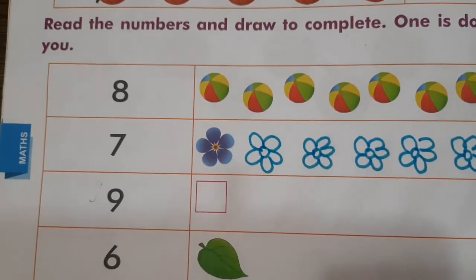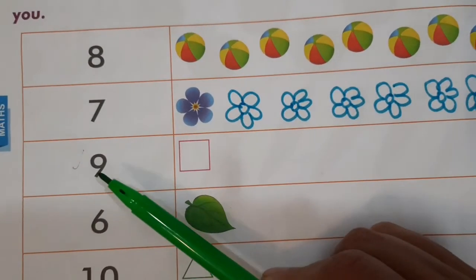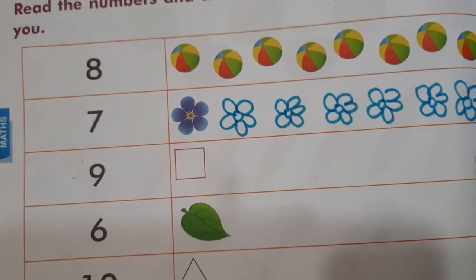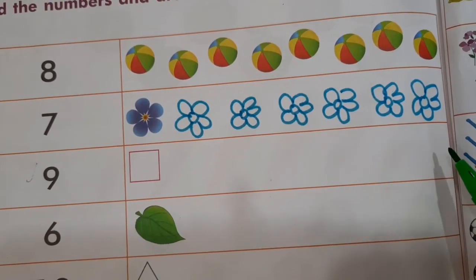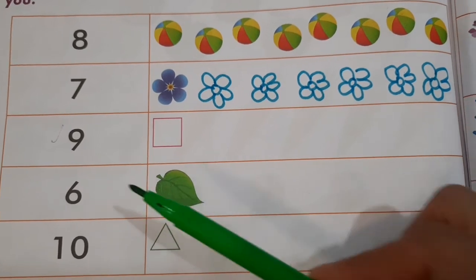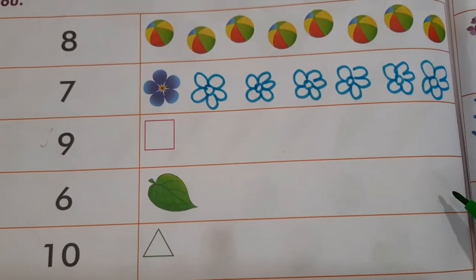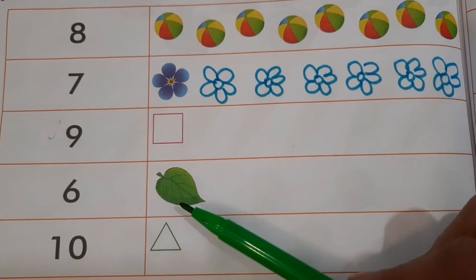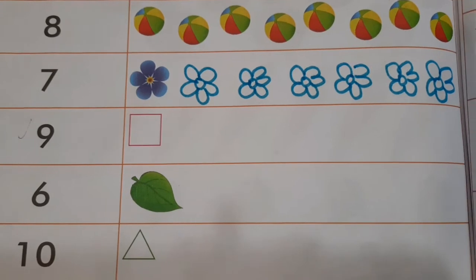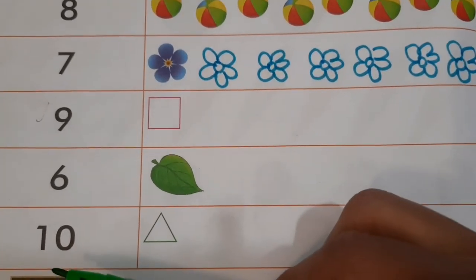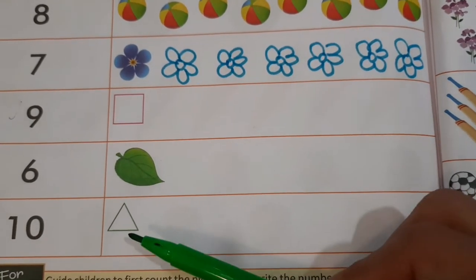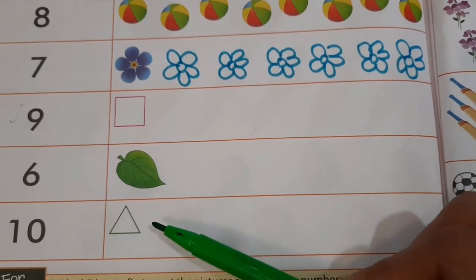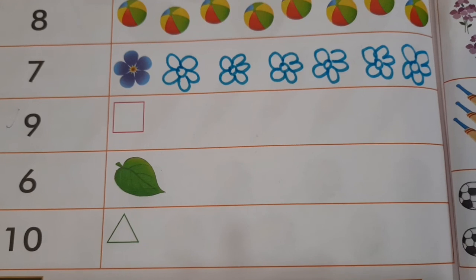Waise hi aapko yeh number hai nine, to yahan pe humko squares draw karne hain. Ek square kiya hua hai, to aur eight squares draw karenge, to total nine ho jaenge. Next hai number six, to yahan pe six leaves hum draw karenge — ek leaf already hai, to aur five draw karenge. Aur next hai number ten, to yahan pe hum ten triangles draw karenge — ek already diya hua hai, to baaki aur nine triangles draw karenge.